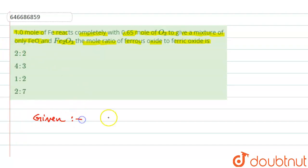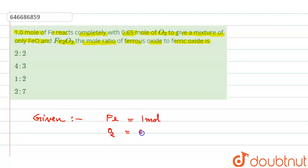Given information: Fe is 1 mole and oxygen is 0.65 mole. It gives a mixture of two compounds — it produces FeO and Fe₂O₃.